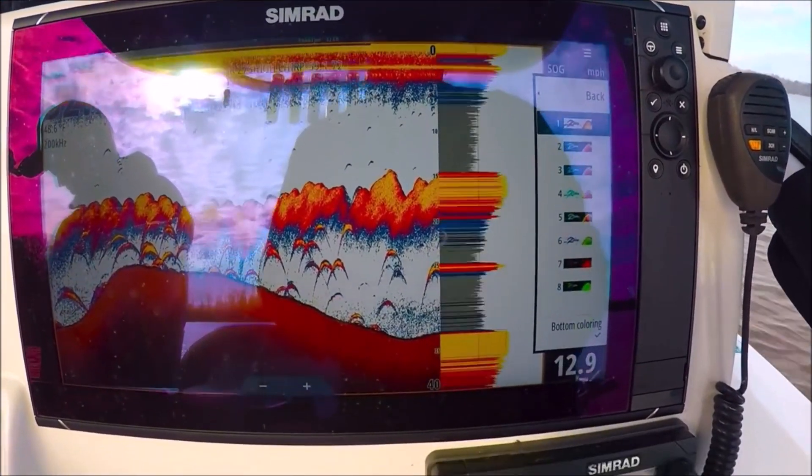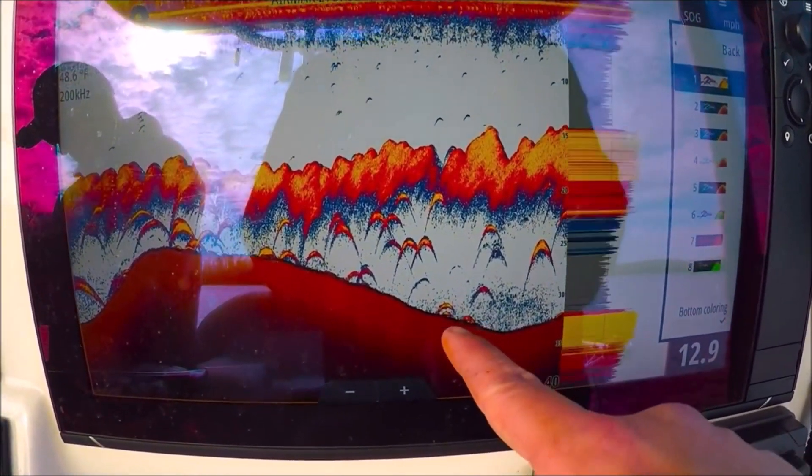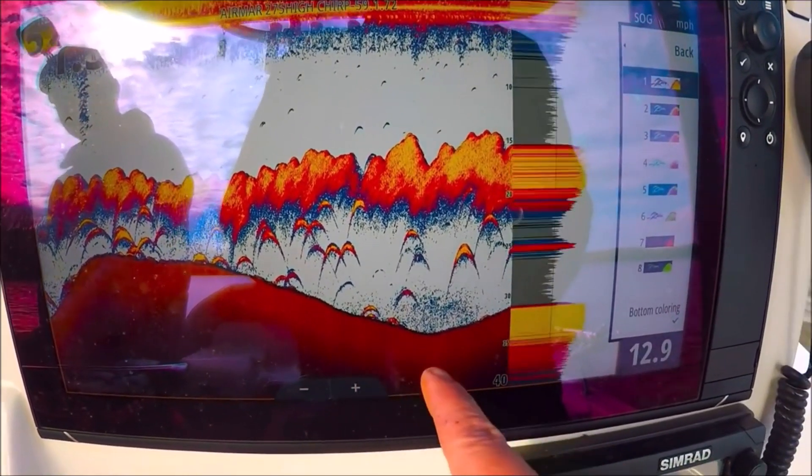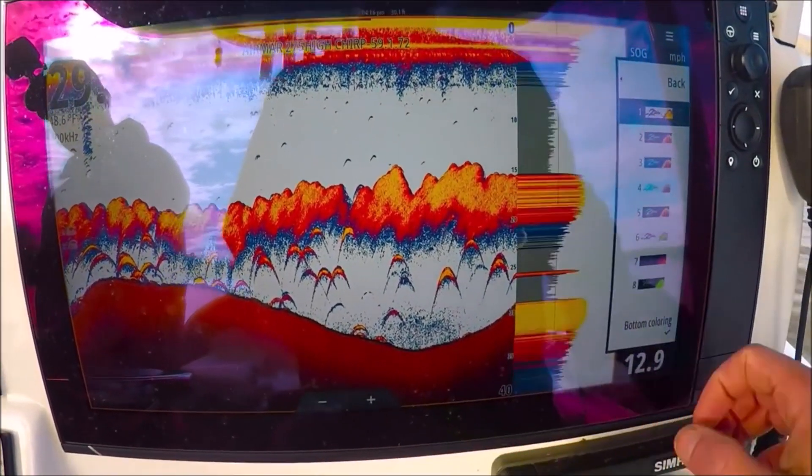Bottom coloring colors the entire bottom here brown. This is a good feature for fish that hold tight to the bottom, like you're seeing here. It really makes them stick out because it only covers the bottom. Flounder fishermen, fish laying on the bottom, they look a lot like that, so this is a good feature for that.